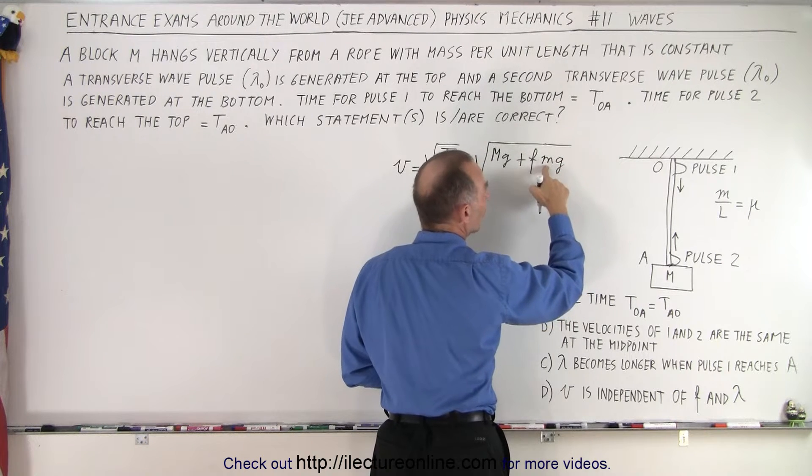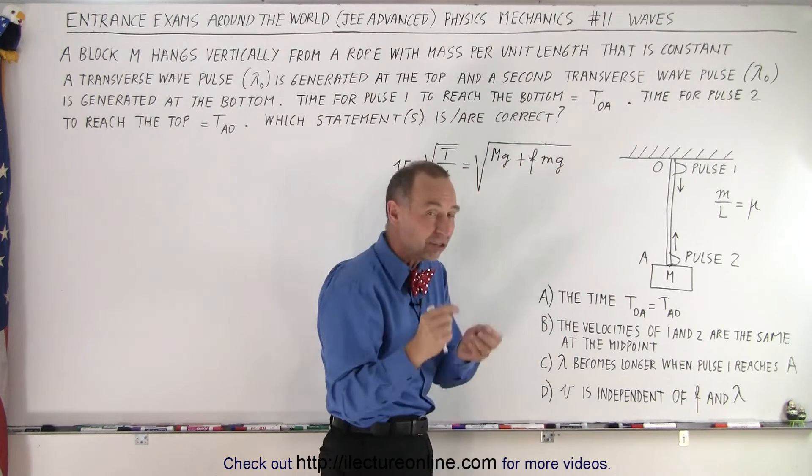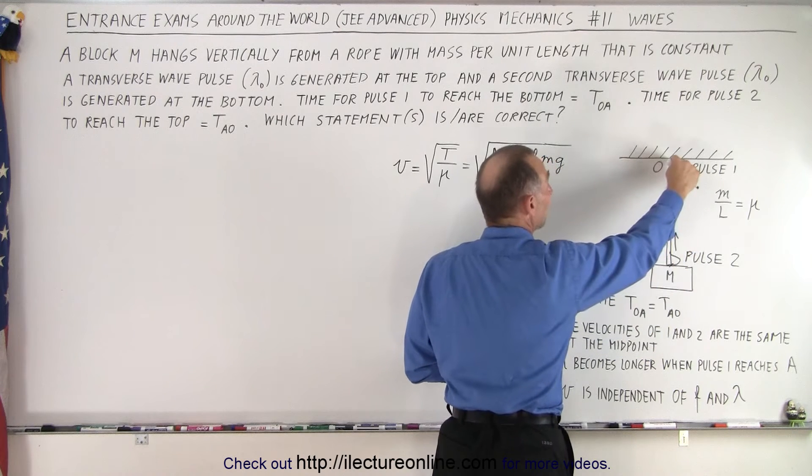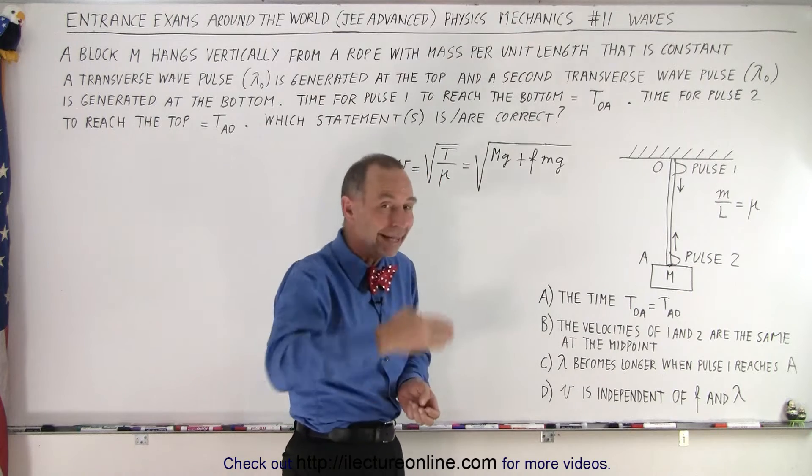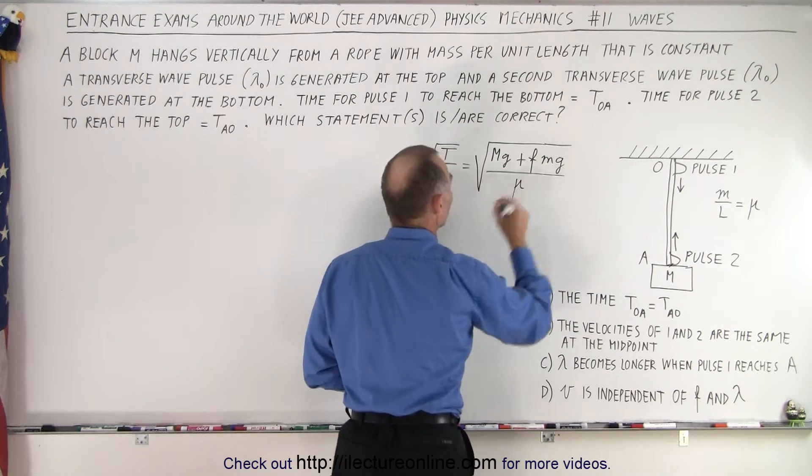We have the total mass of the rope times g, but we're going to multiply it times the fraction, and that fraction depends upon where we are. When we're at the very top, the fraction is one. At the very bottom, f is zero, and any value in between. We divide it by the mass per unit length, which is a constant.